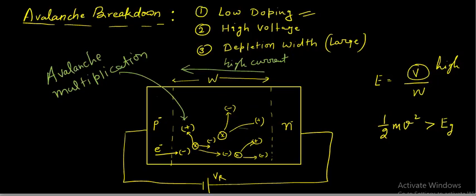In avalanche breakdown, we use low doping and apply high voltage. The reason for low doping is to get a large depletion width. After one electron generates an electron-hole pair, the newly generated electron also needs to increase its kinetic energy beyond the energy band gap to generate the next electron-hole pair. To increase kinetic energy means to increase velocity, and for that it needs space — which is provided by the large depletion width.